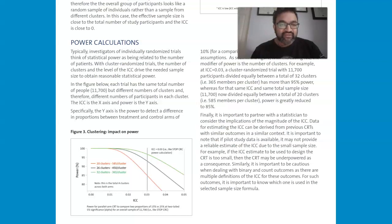Power calculations, I'm going to end with, with ICCs. The ICC drive, so basically with cluster randomized trials, the number of clusters and the level of the ICC drive the needed sample size to obtain reasonable statistical power. So in the figure below, each trial has the same total number of people, 11,700, but different numbers of clusters, and therefore different numbers of participants in each cluster.